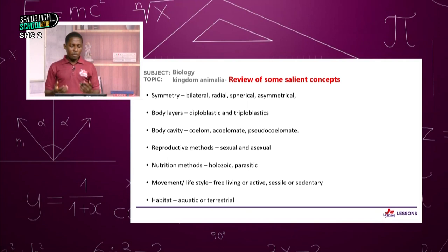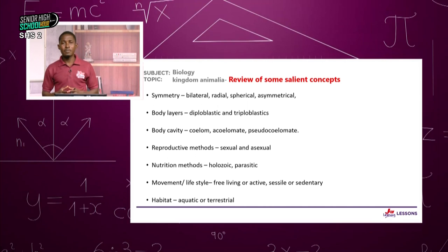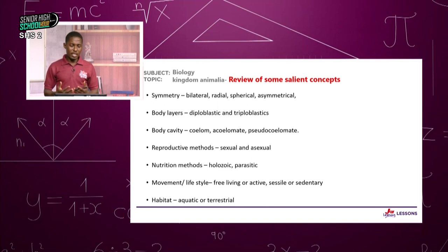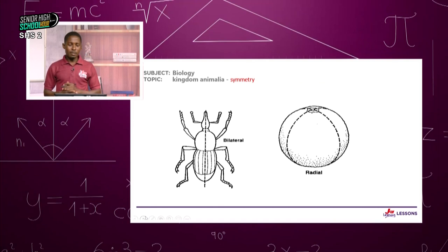Before we go on, I'll be using some concepts I want you to get right. Some we've already studied in Year 1 and coming into Year 2. The first is symmetry. We have bilateral symmetry, radial symmetry, spherical symmetry, and asymmetrical symmetry. What we'll mainly use here is bilateral and radial. Bilateral means there is only one line of cut — you get two equal halves that are mirror images. With radial symmetry, you can use more than two different lines of cut and each time get two equal halves that are mirror images.